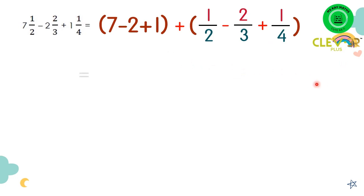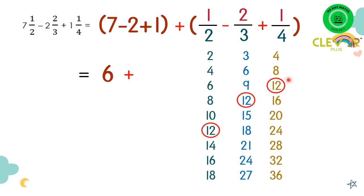So let's solve the whole number first. We have 6, and then plus. For this question, let's look at the denominator. We have to find the common denominator, penyebut yang sama. So for this one we have 2, 3, and 4, and when we look at the times table we can see that the number 12 is the common denominator.